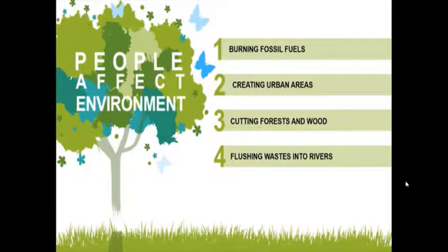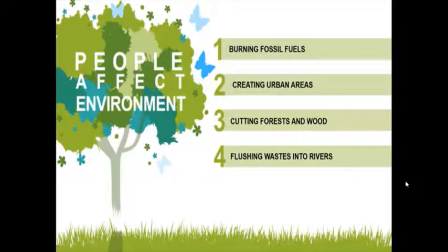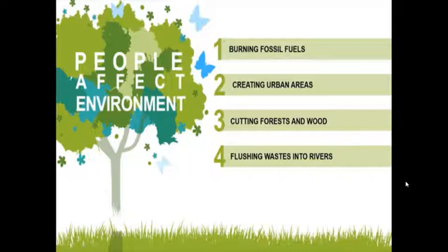Now, the next thing is how people affect the environment. Burning fossil fuels — we use fuel and we must not waste it. We must think about how we keep our environment. Creating urban areas — as population grows, people need homes, and that requires land. To get that land, we go into forests and cut trees to build buildings or factories. We are cutting forests and affecting the environment.